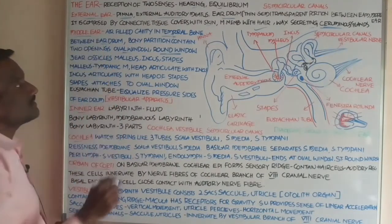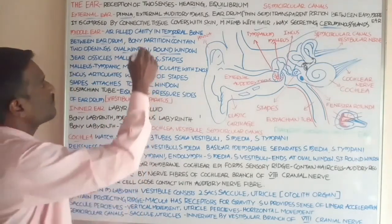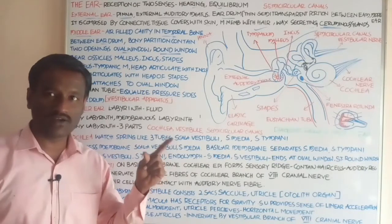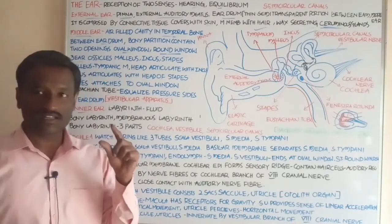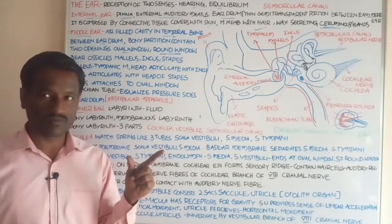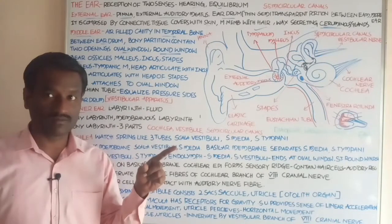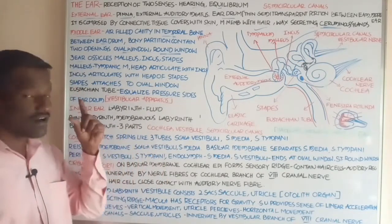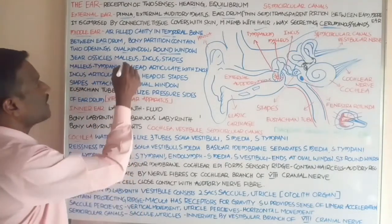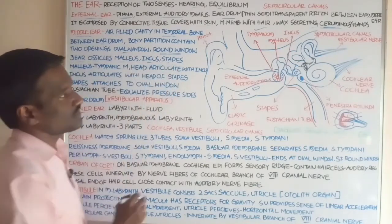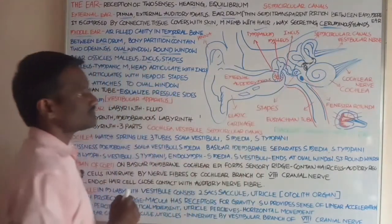The middle ear consists of three ear ossicles — small bony structures arranged in a chain-like manner. These are: malleus, incus, and stapes.